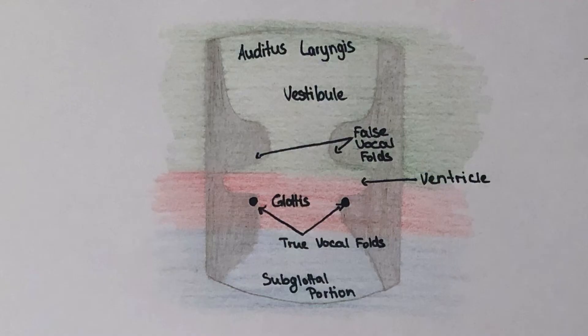The larynx is located in the anterior part of the neck and it is part of the respiratory tract. Its functions include phonation, cough reflex, and the protection of the lower respiratory tract. It can be divided into three parts: the supraglottic part, the glottis, and the infraglottic part. It contains the vocal cords, the glottis, and the larynx ventricles which comprise the glottic space.